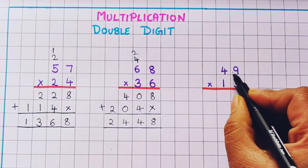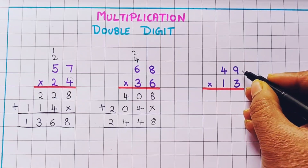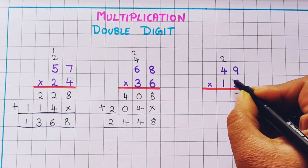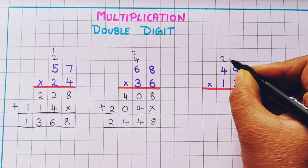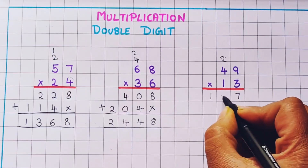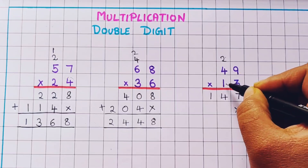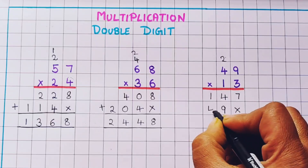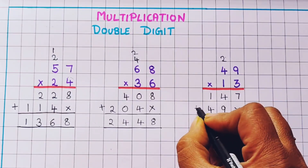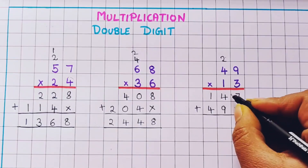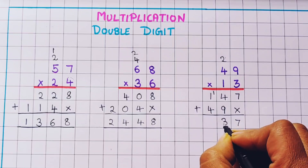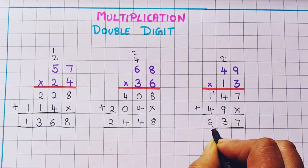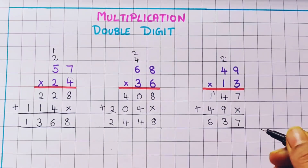Now let's do the last problem: 49 into 13. 3 nines are 27, so I'll write 2 and 7. Now 3 fours are 12, so I'll write 1 and 4. Now for the tens: 4 fours are... I'll put 4. Adding: 7, 9 plus 4 is 13, so I'll put 1 and 3; then 4 plus 1 is 5, plus 1 is 6. So the answer is 637.